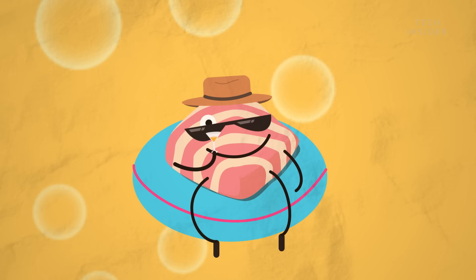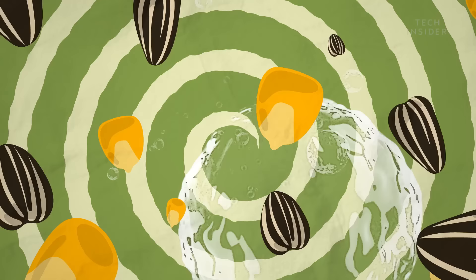Your body is equipped to handle gum the same way it deals with other food that it can't fully digest, like corn and sunflower seeds. The muscles of your digestive tract move it along and eventually flush it out of your system in a day or two, along with everything else.